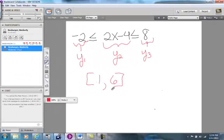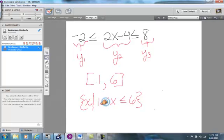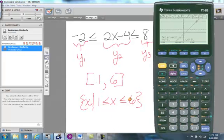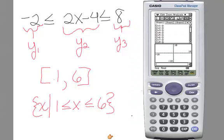So the slanted line 2X − 4 is between the two horizontal lines from X = 1 to X = 6. In interval notation, we write [1, 6] using square brackets on both ends. In set notation, this is read: the set of all X such that 1 is less than or equal to X, which is also less than or equal to 6.